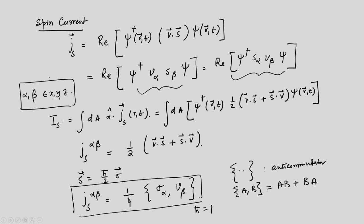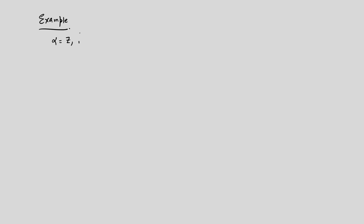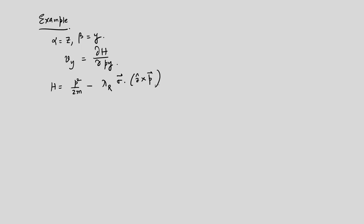Let us take a particular example with alpha equal to z and beta equal to y. The velocity v_y is obtained from Hamilton's equation as del H / del p_y. Consider a Hamiltonian H equals p²/2m minus lambda_R (sigma dot z-hat cross p), where lambda_R denotes Rashba spin-orbit coupling, with h-bar set to 1. This is the kinetic energy plus the Rashba spin-orbit coupling term.